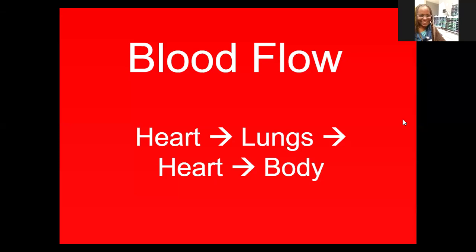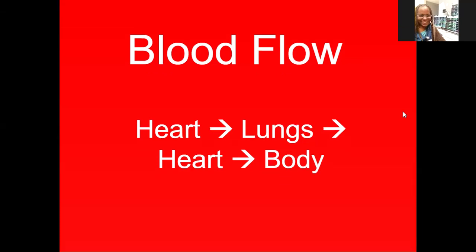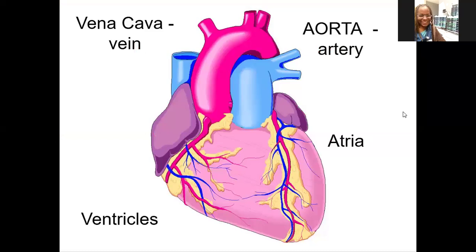Today we're going to be talking about blood flow. When we talk about blood flow, we're going to learn about the different parts and the anatomy of the heart, as well as the way blood flows. Blood goes from the heart to the lungs, back to the heart, and then out to the body.